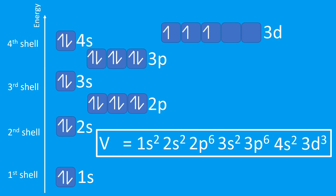Let's look at a more difficult example. You may recall from the previous video that the 4s subshell fills before the 3d. Something from the transition block, such as vanadium, has a slightly different-looking electron configuration. The 4s filled before the 3d. Let's look at what V³⁺ might look like — and note that we can't use the periodic table to predict charges for transition metals, so I'm simply telling you this is a 3+ ion, meaning it has lost three electrons.